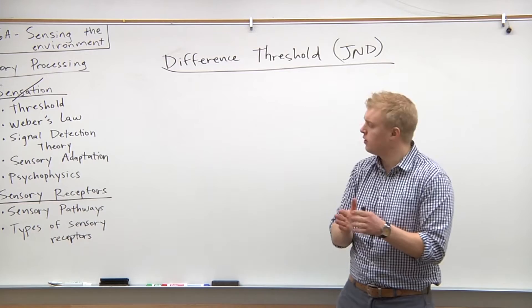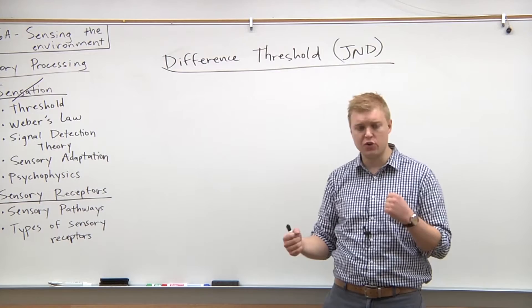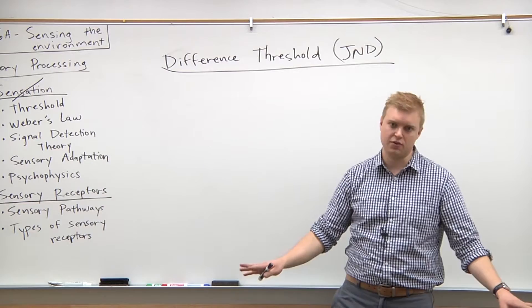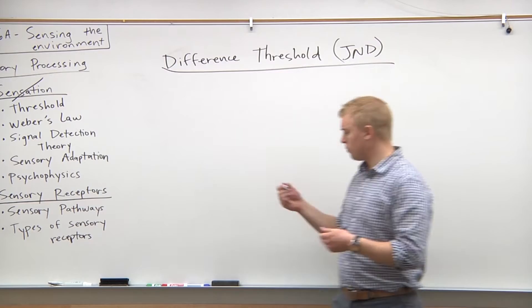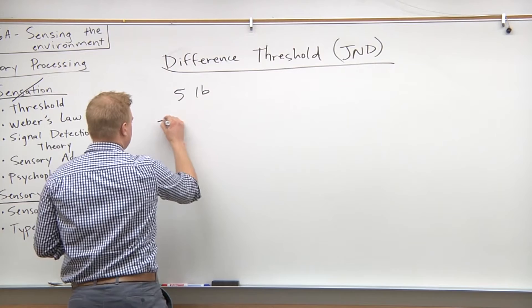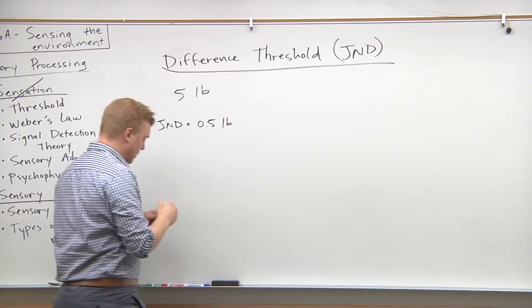Let's think, for example, I'm lifting a five pound weight and if you exchange that with a 5.001 pound weight, I'm probably not going to notice that difference. But if you gave me an eight pound weight, then I probably would be able to pick that up. So in this scenario for a five pound weight, the JND would be about, give or take, about a half pound where people would be able to pick that up about half the time.